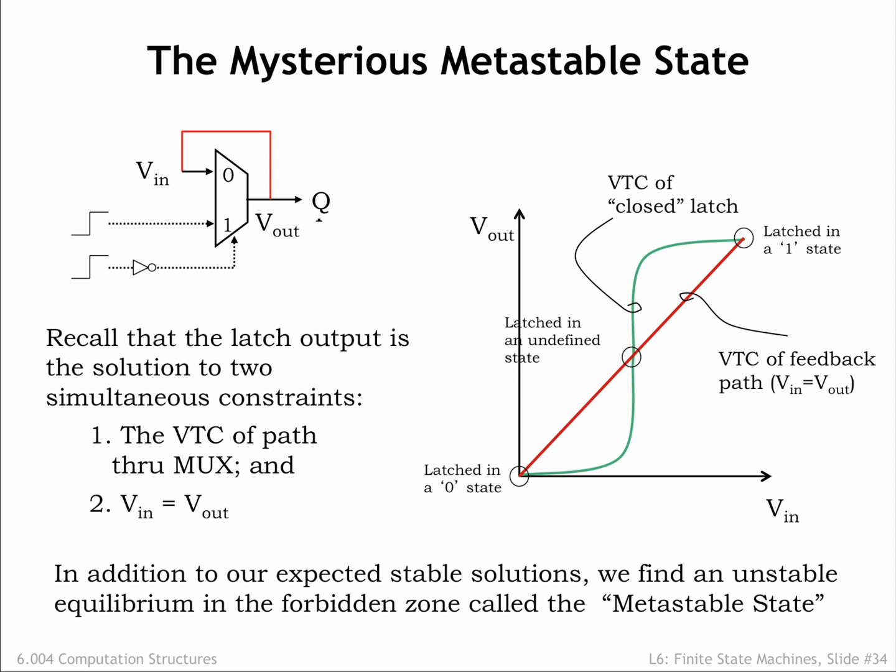When Q is at the metastable voltage, the storage loop is in an unstable equilibrium called the metastable state. In theory, the system could balance at this point forever, but a small change in the voltages in the loop will move the system away from the metastable equilibrium point and set it irrevocably in motion towards the stable equilibrium points.